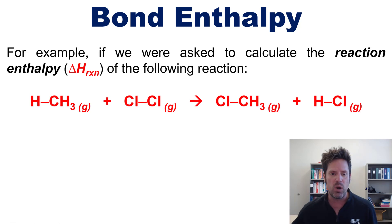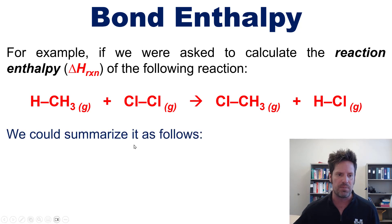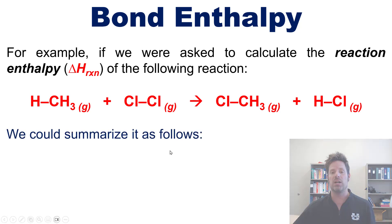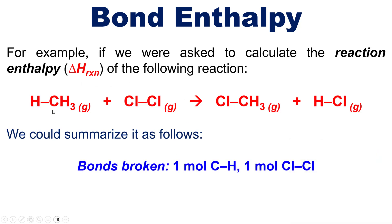...we could summarize it as follows. The total number of bonds broken — that is, reactant bonds — includes one mole of C-H bonds right here and one mole of Cl-Cl single bonds. As you look at this closely, one single carbon-hydrogen bond gets broken and replaced with a carbon-chlorine bond, and then one chlorine-chlorine single bond gets broken and replaced with a chlorine-hydrogen bond.